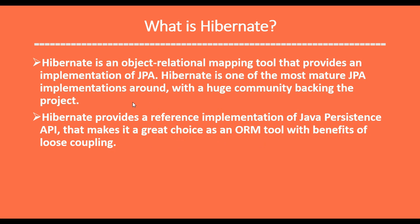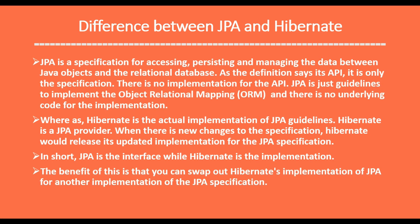Hibernate is a popular implementation of Java Persistence API and provides loose coupling. This means that when we use JPA, there can be any implementation — for example, if we are using Hibernate, we can later change it to EclipseLink. That is what loose coupling means: we can change the implementation at any time.